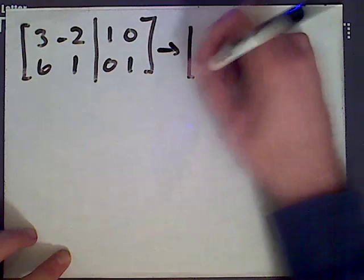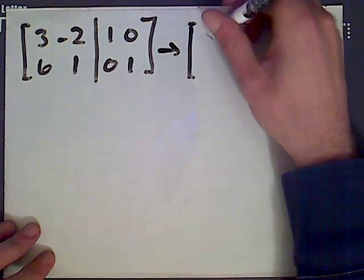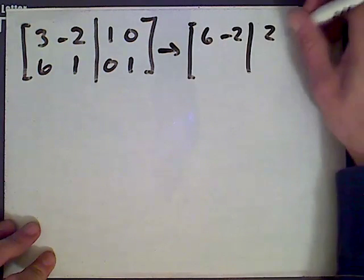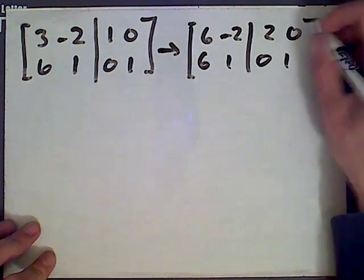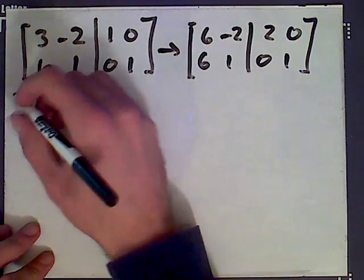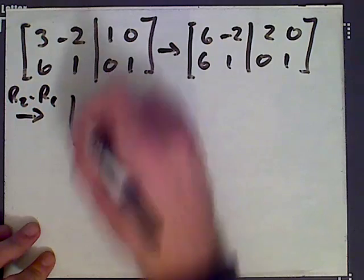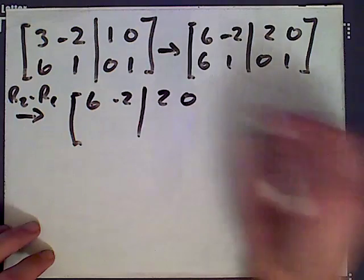So as we saw, what you might do first is multiply the top row by 2. You get 6, negative 2, 2, 0. The second row stays the same. And then we want to get rid of this 6 down here. So we take row 2 and subtract row 1. We have 6, negative 2, 2, 0. The top row stays the same.